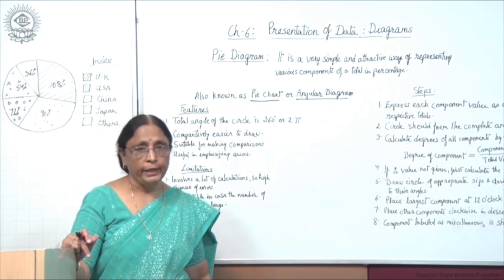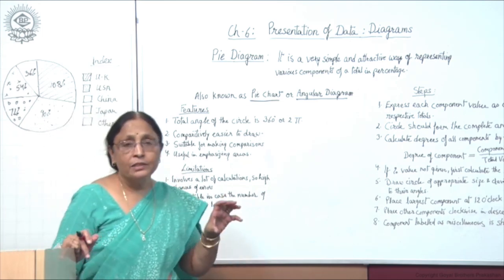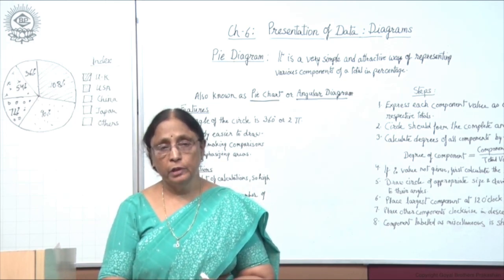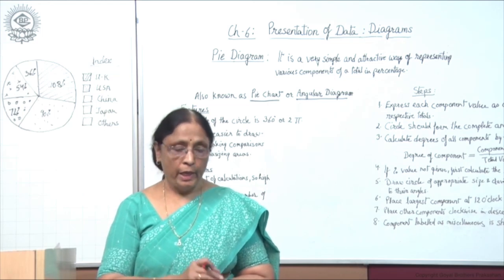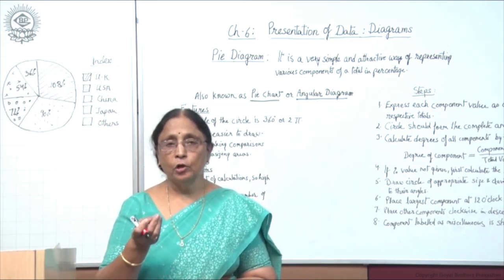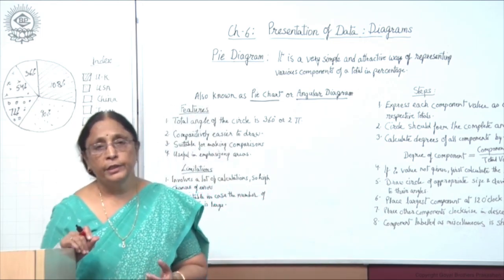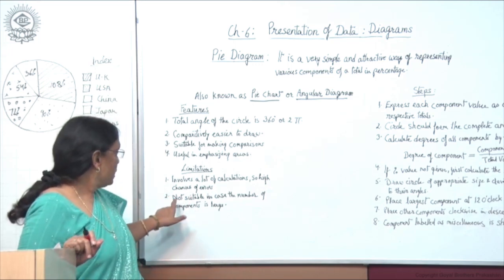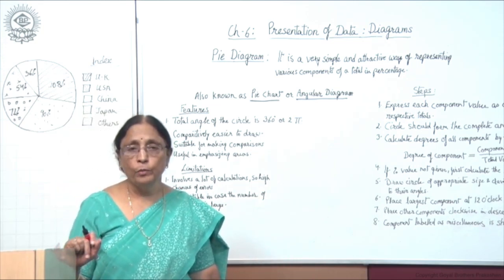These are the four main features of the pi diagram: 360-degree angle, easier to draw, suitable for comparison, and useful in emphasizing areas. Now the limitations. First, as you have to show percentages on the basis of angles, sometimes a lot of calculations are involved — you must convert data to percentage and then to angles. This involves lot of calculation and therefore more chances of errors.